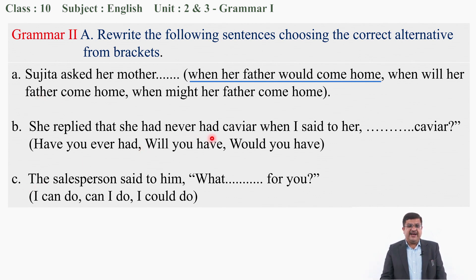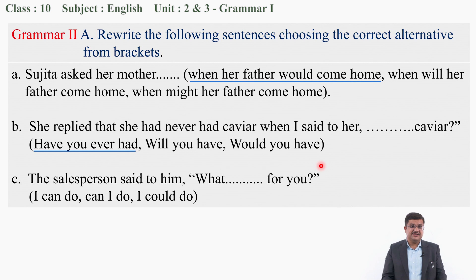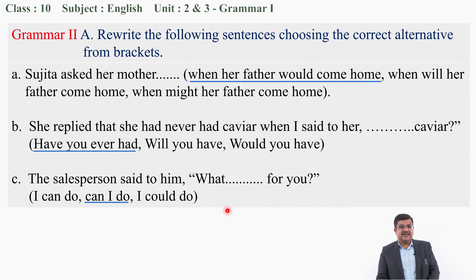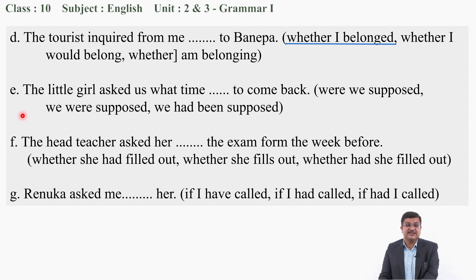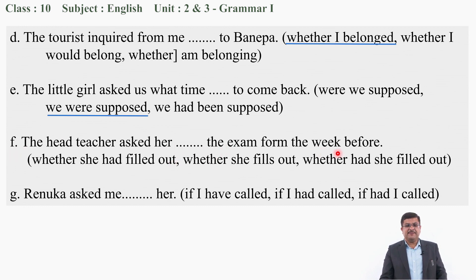B: She replied that she had never had. When I said to her — 'have you ever had', 'will you have', or 'would you have'? The answer is: have you ever had. C: The salesperson said to him — 'what I can do', 'can I do', or 'I could do for you'? The answer is: what can I do. D: The tourist inquired from me — the answer is: whether I belong to Banepa. E: The little girl asked us — 'where we supposed', 'we were supposed', or 'we had been supposed'? The answer is: we were supposed. F: The head teacher asked us — the answer is: whether she had filled out.